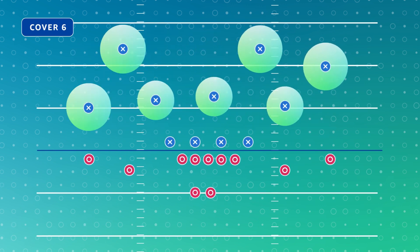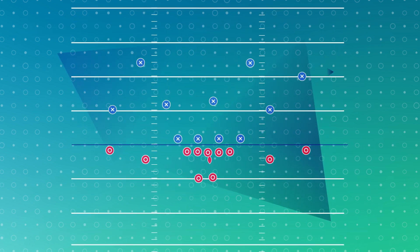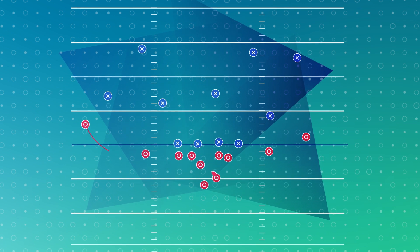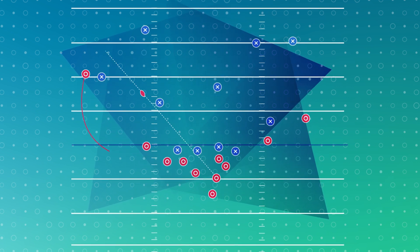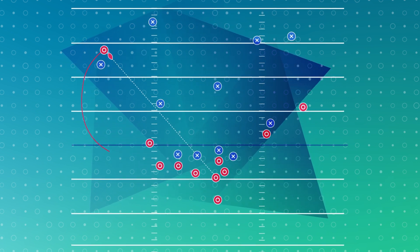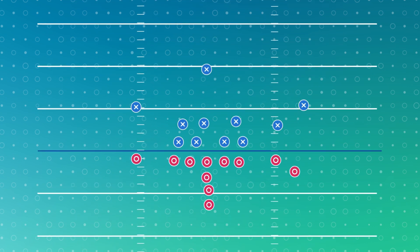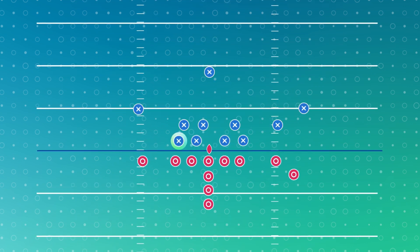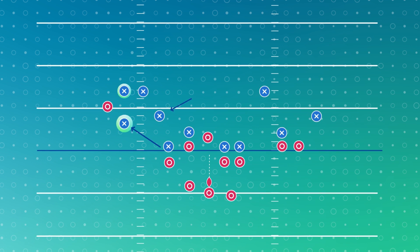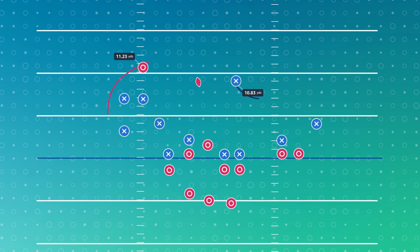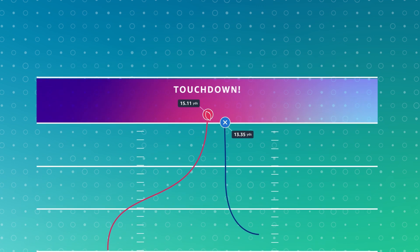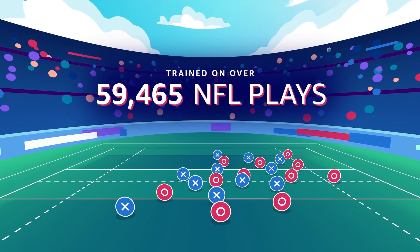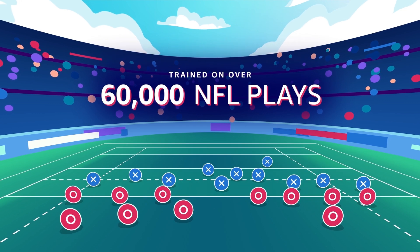Teaching a computer to see and understand what's happening on defense is incredibly hard. To correctly identify these defenses, the technology needs to be able to factor in variables like how defenders line up before the snap, disguising coverages, adjusting to offensive player movement once the ball is snapped, player acceleration, and even blown coverage assignments.